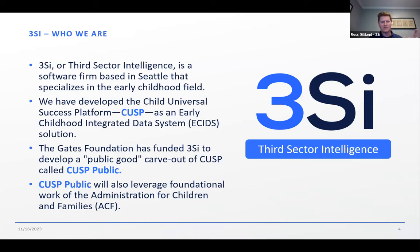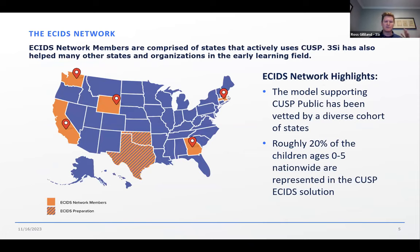We are also leveraging some foundational work that ACF had done in engaging with states about their needs from tools like this. CUSP, the ESID solution, is currently implemented in five states, representing about 20% of the child population zero to five. 3SI has also done ESID prep work with two additional states, and we've done some form of technical assistance in early childhood data for roughly 15 or more additional states. The point is that there's a lot of experience we've brought to develop this tool and make it as targeted as possible to the needs that states would have.